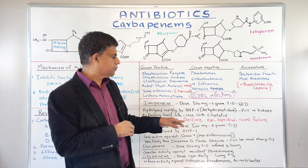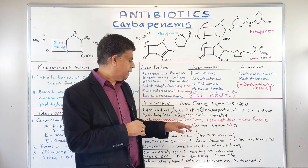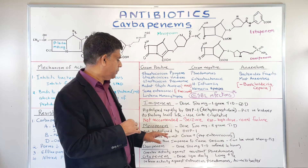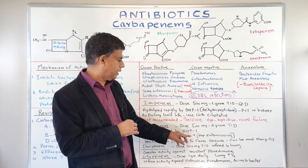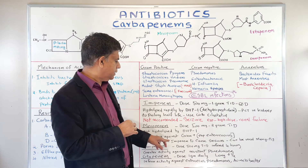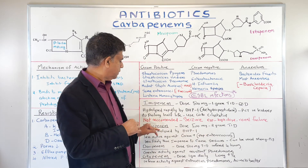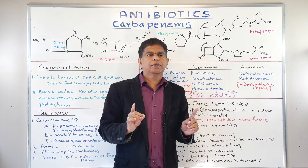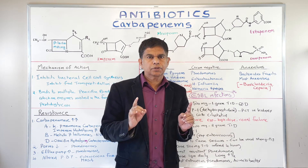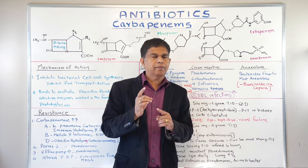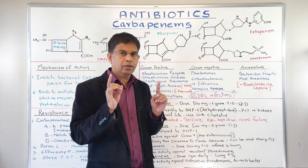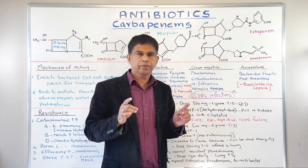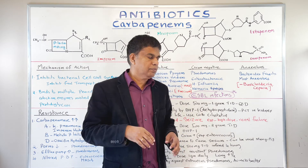The next drug is meropenem, dosed at 500 mg to 2 grams TID. Meropenem is not hydrolyzed by DHP-1, so there is no need to combine it with cilastatin. It is most active against gram-positives, especially Enterococcus. Importantly, meropenem is less likely than imipenem to cause seizures, so it can be used for meningitis and other CNS infections. In contrast, imipenem can cause seizures and is contraindicated in patients with a seizure history.